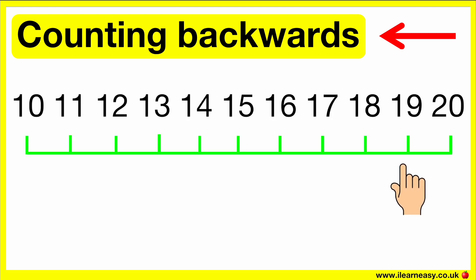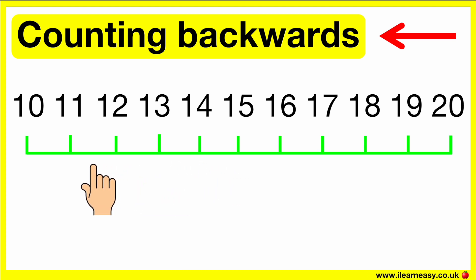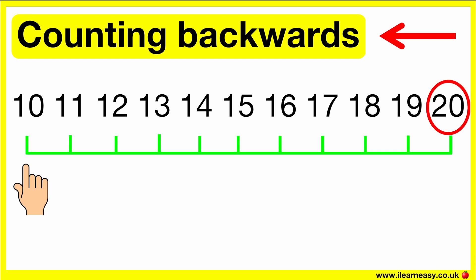20, 19, 18, 17, 16, 15, 14, 13, 12, 11, 10. Here, we are counting backwards using the two-digit numbers from 10 to 20. Remember, a two-digit number is any number between 10 all the way to 99. In this number line, the two-digit number 20 has the highest value and the two-digit number 10 has the lowest value.